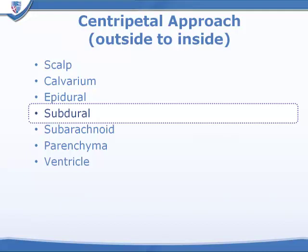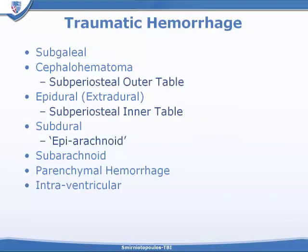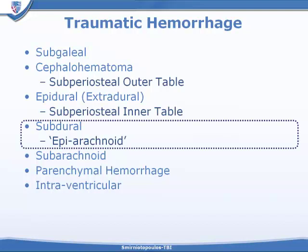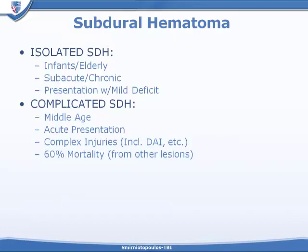Let's now talk about blood accumulating in the theoretical potential subdural space. A subdural hematoma can also be called an epiarachnoid hematoma, which is useful in understanding how a subdural hematoma may spread into the interhemispheric fissure and also around the convexity and under the temporal and occipital lobes. Isolated subdural hematomas are most often limited to very young patients, infants, and the elderly, and may be associated with a subacute or chronic clinical presentation with minimal neurologic deficit.